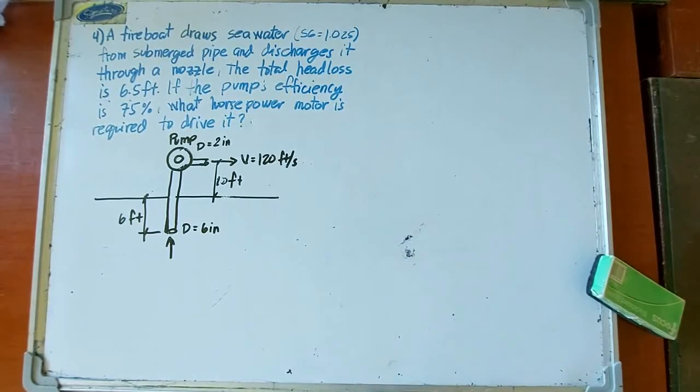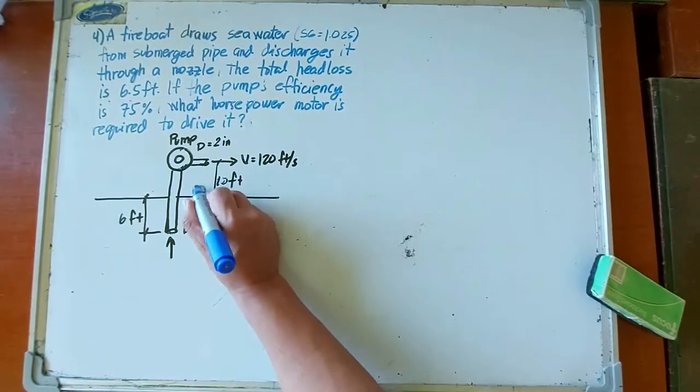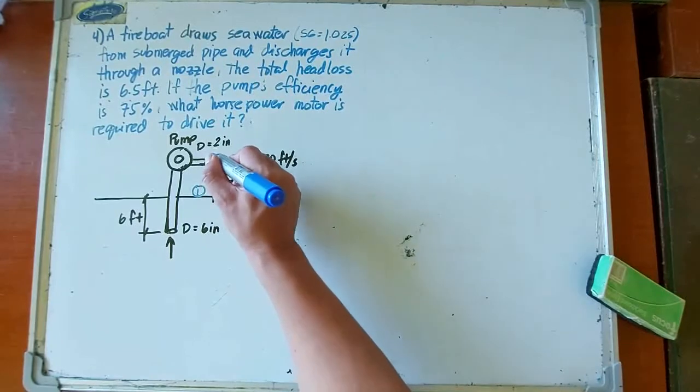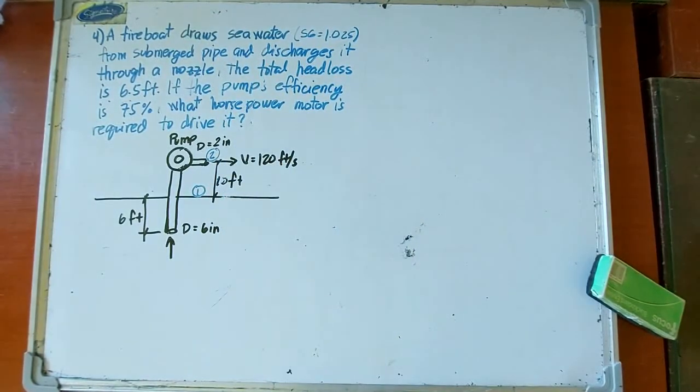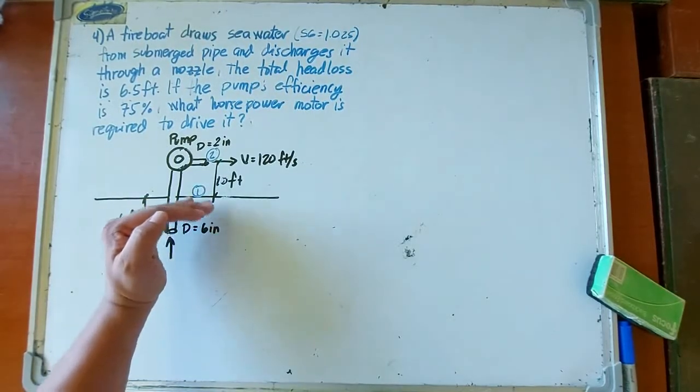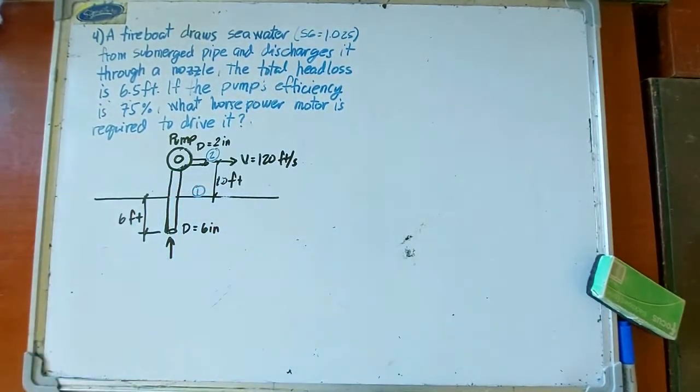I think we should put our points at the surface of the seawater. Our first point is at the surface, and the second point is at the nozzle, at the outlet. Why point one here? Since the sea or ocean is very large, the movement, even if downward, is negligible. So we can neglect the velocity there. The pressure there is atmospheric. And the elevation depends on where we place our datum, but we can compute the elevation when we designate a certain datum.